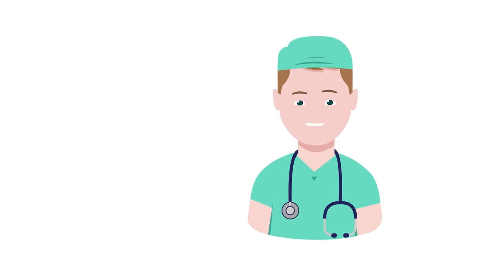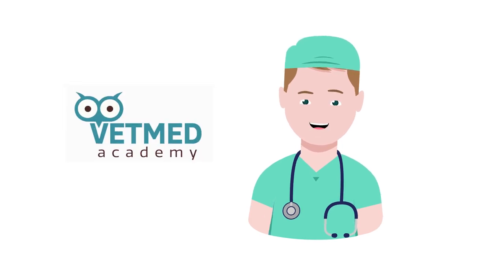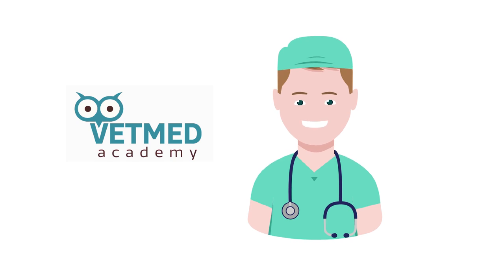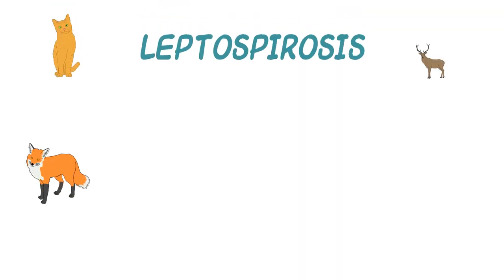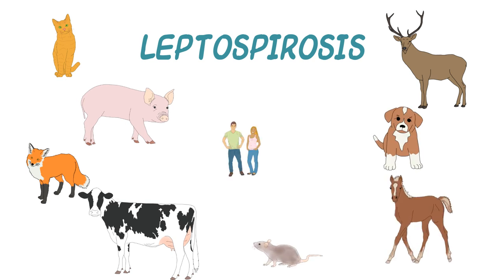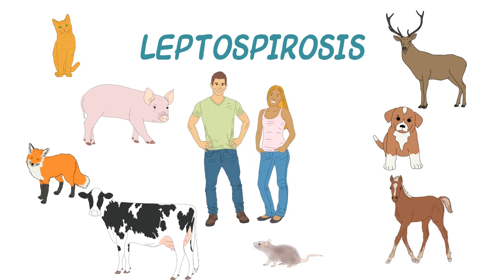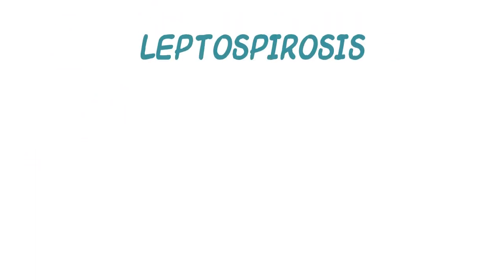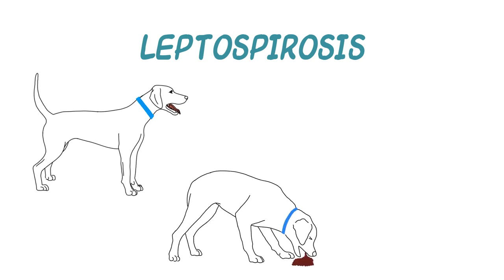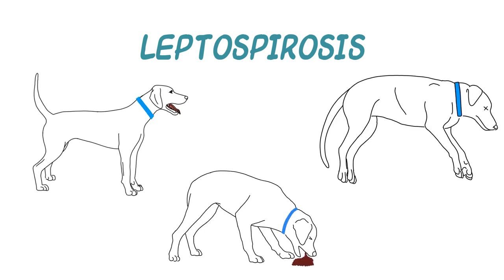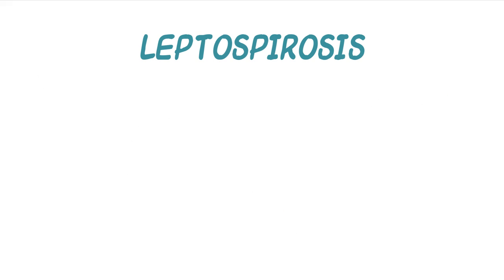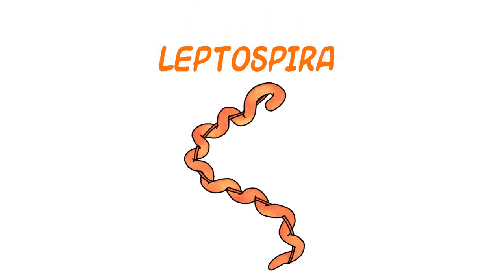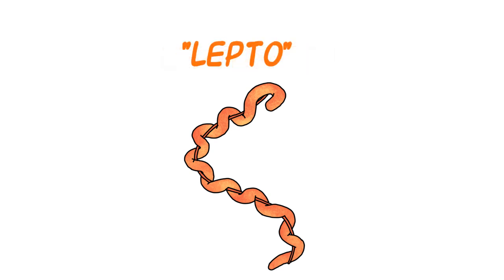Howdy, buckaroos. It's time for another adventure in zoonosis with the VetMed Academy. Today, we're going to be discussing leptospirosis. Leptospirosis is a disease that can affect virtually all mammals, including man. As such, it is called a zoonosis and is seen around the world. The disease can cause anywhere from a mild subclinical infection to death due to organ failure. It is caused by infection with pathogenic species of leptospira. From here on, we'll call the disease lepto for short.